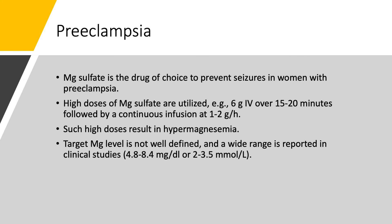What about preeclampsia? The drug of choice is magnesium sulfate, which has been used for over 50 years for this indication — phenytoin is not better. The drug of choice to prevent seizures in women with preeclampsia is magnesium sulfate. On purpose, we use a really high dose. For example, one protocol uses 6 grams IV over 15 to 20 minutes, then a continuous infusion of 1 to 2 grams per hour. This intentionally induces hypermagnesemia to prevent seizures — the patient will have hypermagnesemia, and that is the purpose of such a dose.